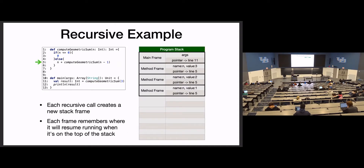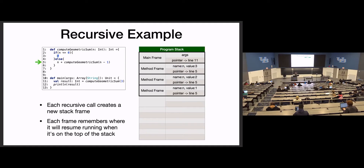Let's look at the stack and see how this recursion unfolds. When we get to the call with n equals three, we have four frames on the stack: main, then frames with n=3, n=2, n=1. Each frame is waiting at line five for a recursive call to resolve. We're about to call computeGeometricSum of zero. We run through the algorithm, hit the base case, and just return zero. So when we're on the frame with n=3, we boldly called computeGeometricSum of two and assumed it would return the correct value.